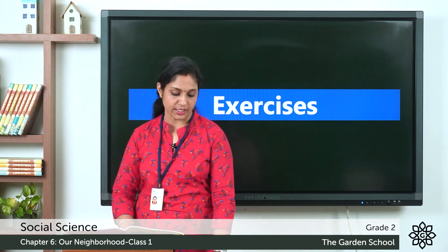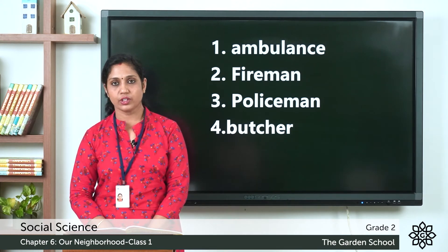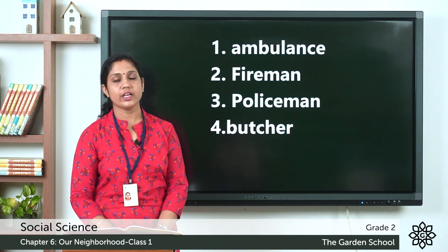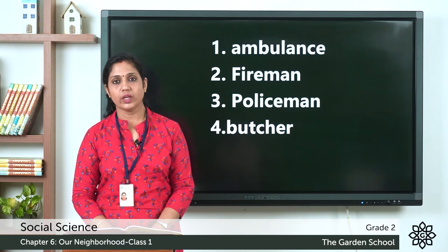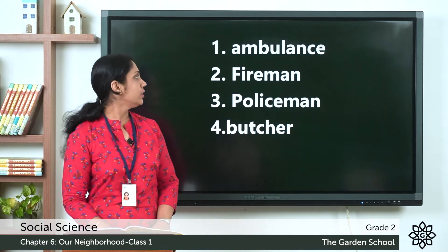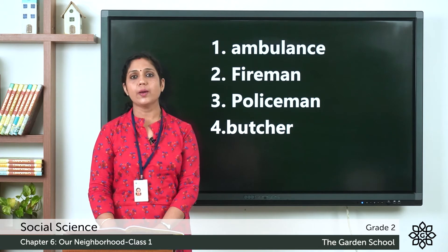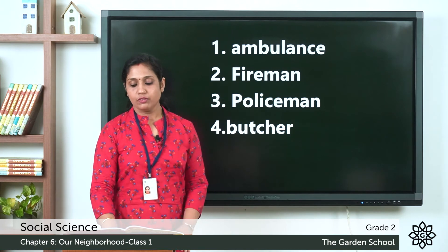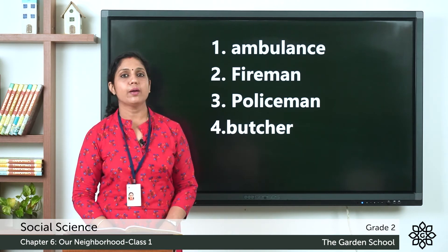Now let's check the answers. The first question: I am a vehicle, I carry sick people to the hospital, there is a red cross on me — I am an ambulance. Second: I work in a fire station, when there is a fire I go in a fire engine to put out the fire — I am a fireman. Third: I work in a police station, I protect people from thieves and other dangers — I am a policeman. Fourth: I cut and sell meat and chicken in the market — I am a butcher.